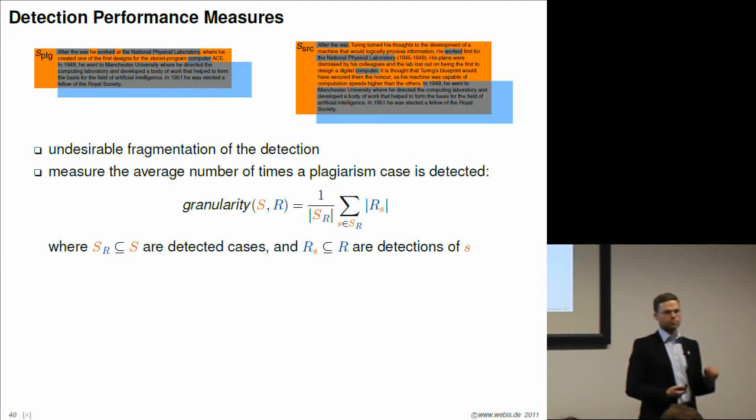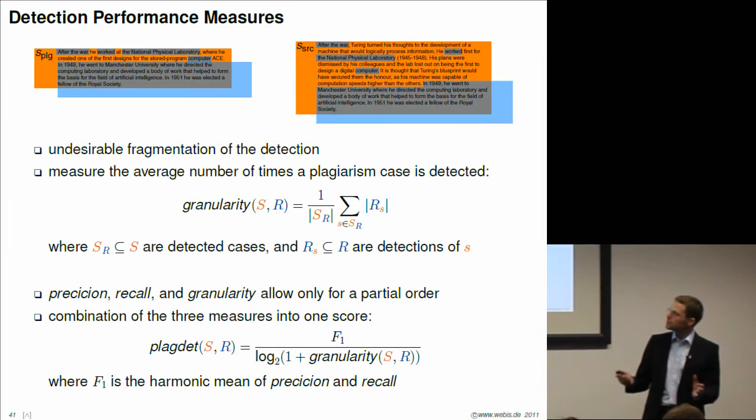We have introduced a new measure here, which has to be combined with precision and recall. We've got three measures now: precision, recall, and granularity. Having three measures to judge a plagiarism detection algorithm is kind of difficult, because one algorithm can be good in precision, bad in recall, good in granularity, but there may be another algorithm which is bad in precision, good in recall, and bad in granularity. Which one is better now?